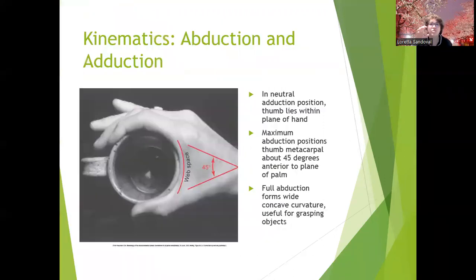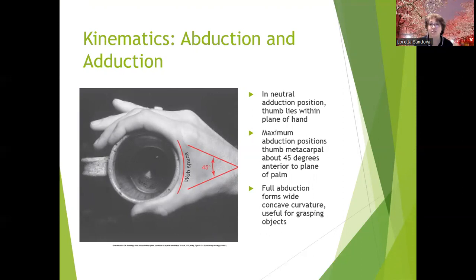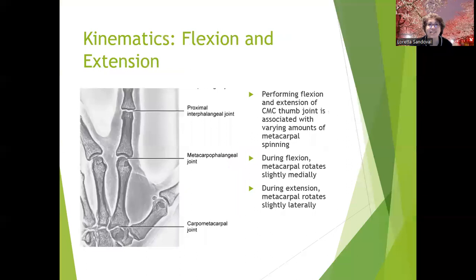In adduction, the thumb lies within the plane of the hand. Maximum abduction positions the thumb metacarpal about 45 degrees anterior to the plane of the palm. If you're standing in anatomical position and move your thumb anteriorly, that is abduction of the thumb. Full abduction forms a wide concave curvature useful for grasping objects — or doing sock puppets, though that's not really a functional task.